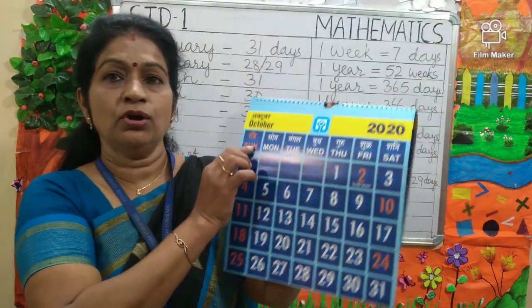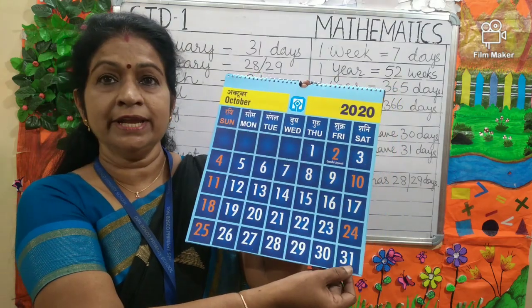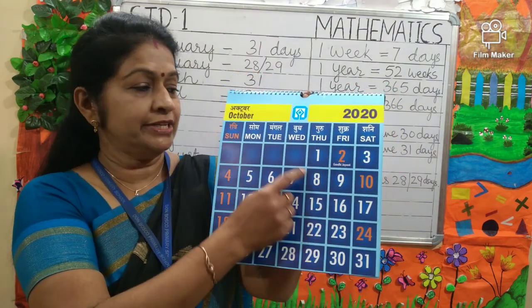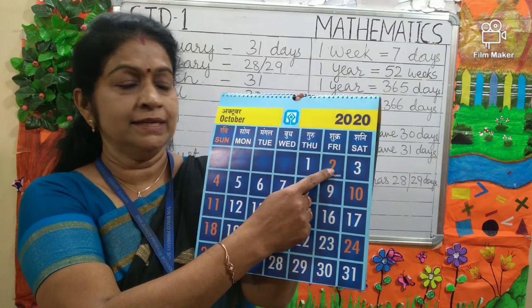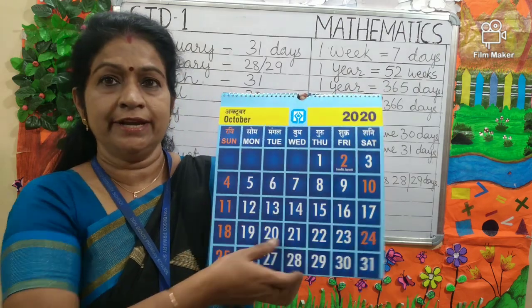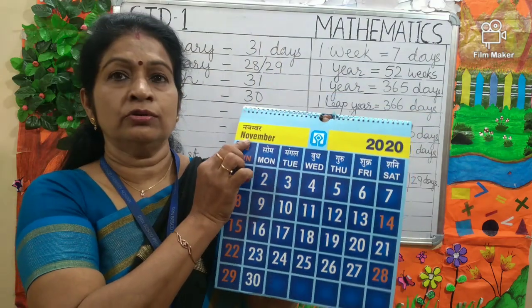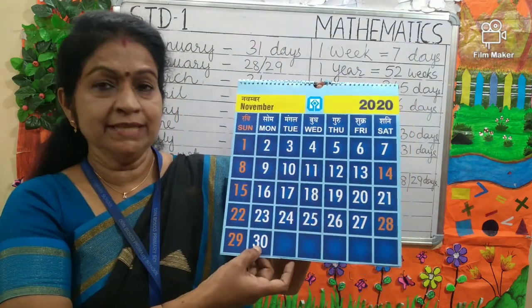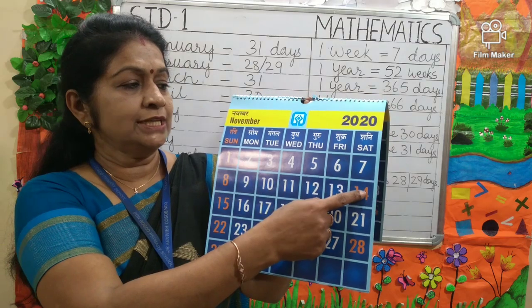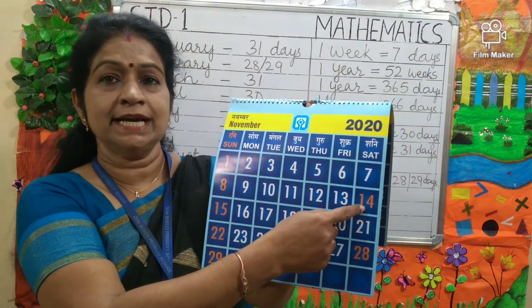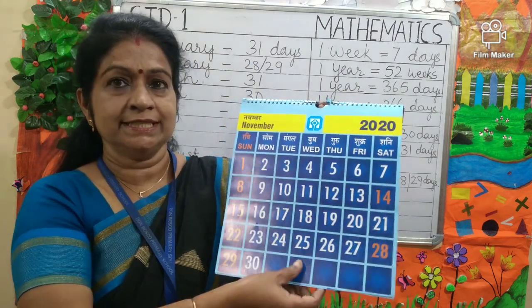Next is October. October has 31 days. Can you tell me which day is 2nd October, Gandhi Jayanti? It is on Friday. Next is November. It has 30 days, and 14th November is on Saturday — Children's Day falls on Saturday.